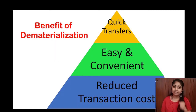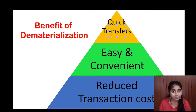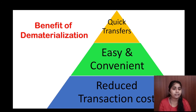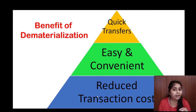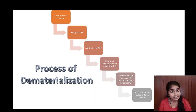Now let's see the benefits of dematerialization. As shown in the chart, the first benefit is quick transfer — we can transfer the ownership of securities to another person very quickly. The second benefit is that it is easy and convenient, as securities in electronic form are more manageable than physical form. The third benefit is reduced transaction cost. So the three main benefits are: quick transfer, easy and convenient, and reduced transaction cost.